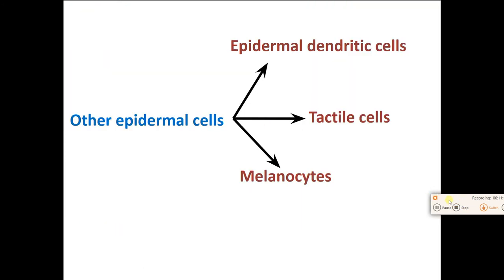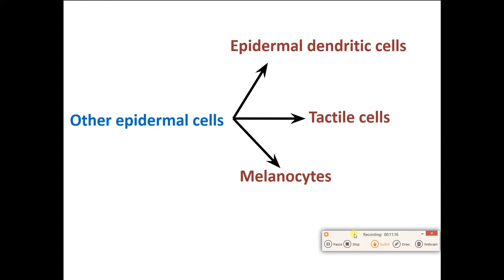There are other cells besides keratinocytes in the epidermis. There are melanocytes, which produce the pigment melanin. There are tactile cells — tactile refers to your sense of touch. And there are cells called epidermal dendritic cells. These are the other varieties of epidermal cells besides the keratinocytes.